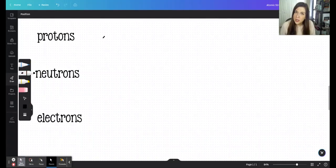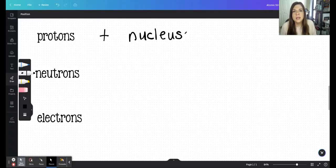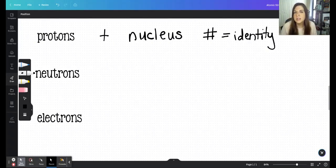Protons are the positive subatomic particle and they are found in the nucleus. The thing about them is that the number of protons will tell you the identity of the atom. If you look at the periodic table, you'll see that from left to right and top to bottom, all of the elements are given a whole number to count them, and that is called their atomic number.